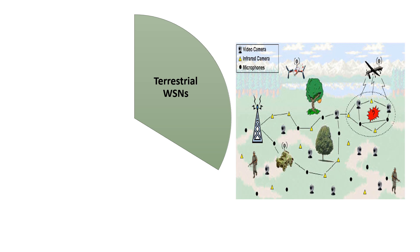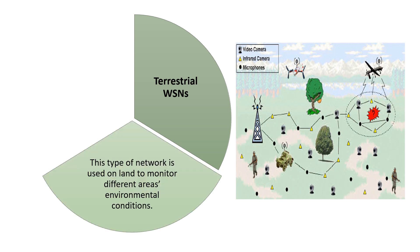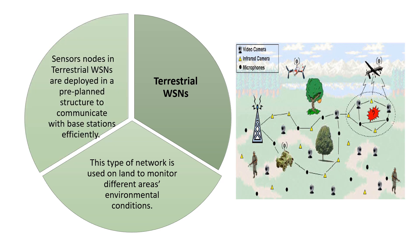The first one is the terrestrial type. This type of network is used on land to monitor different areas of environmental conditions. It includes various sensors, cameras, microphones, etc. to monitor the environmental conditions. The sensor nodes in terrestrial WSNs are deployed in a pre-planned structure to communicate with the base stations efficiently.